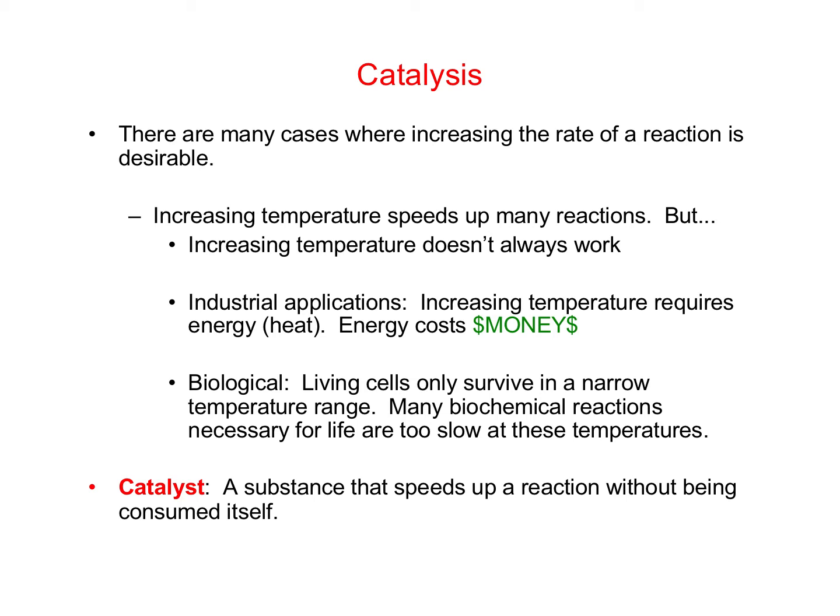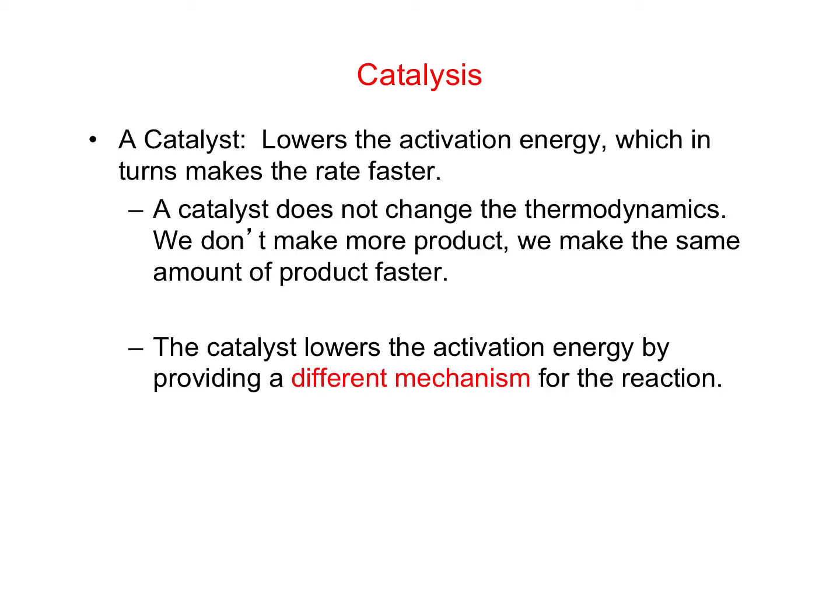The desired reactions might be faster, but it's not any good if we kill the cells. Many biological reactions that are necessary for life are too slow at temperatures at which the cells can survive. A catalyst is a substance that speeds up a reaction, and another important feature of a catalyst is that it's not consumed over the course of the reaction — it's usually reproduced before the reaction finishes. The way catalysts speed up the reaction is by lowering the activation energy, and if you lower the activation energy, then the reaction becomes faster.